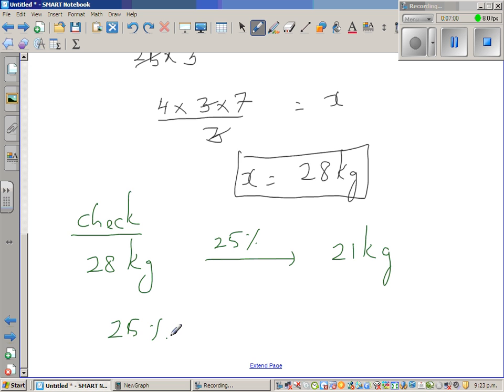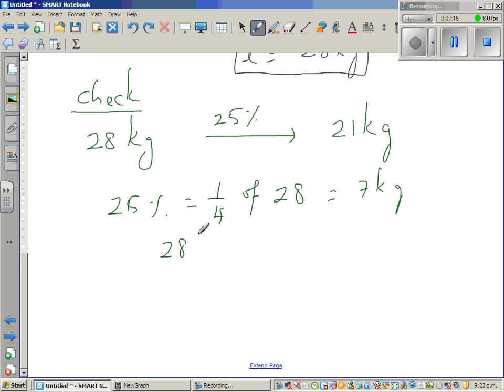So what is 25%? So 25% is nothing but a quarter. So what's a quarter of 28? So quarter is half of a half. So half is 14. So quarter is 7 kgs. And does it make sense? 28 kgs minus 7 kgs is equal to 21 kgs. So the difference is 7 kgs.